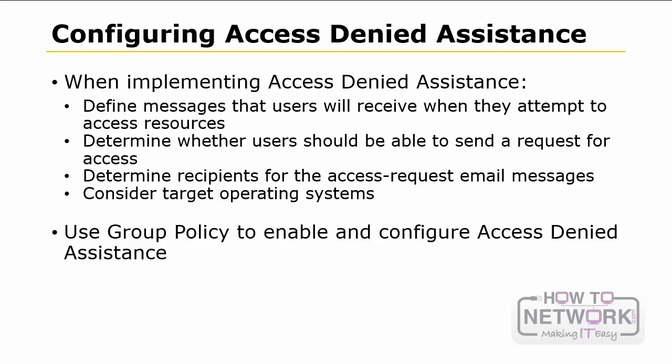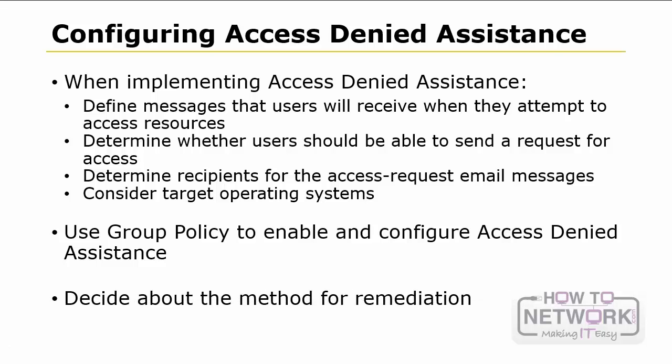Open the Group Policy Object Editor and navigate to Computer Configuration > Policies > Administrative Templates > System > Access Denied Assistance. In the Access Denied Assistance node, you can enable Access Denied Assistance and provide customized messages for users. Alternatively, you can use the FSRM console to enable Access Denied Assistance. However, if Access Denied Assistance is enabled in Group Policy, the appropriate settings in the FSRM console are disabled for configuration. You can also use the FSRM management properties page to configure a customized Access Denied Assistance message for a particular folder tree within the server, for example a per-share message.